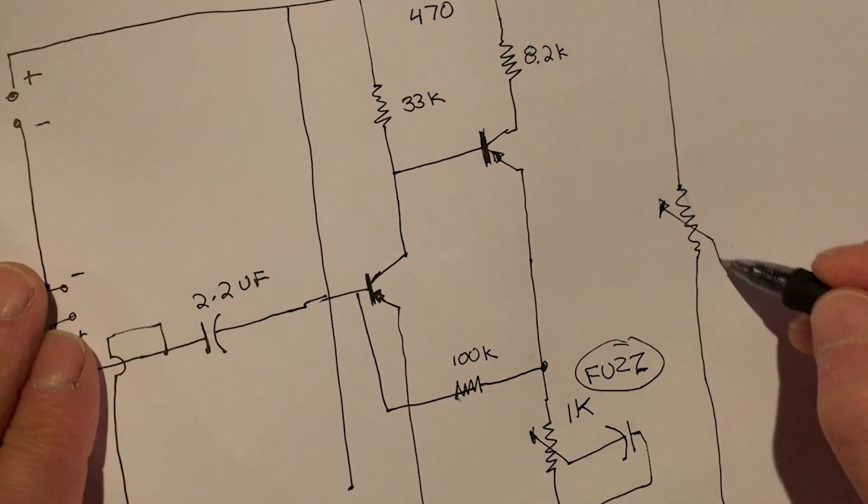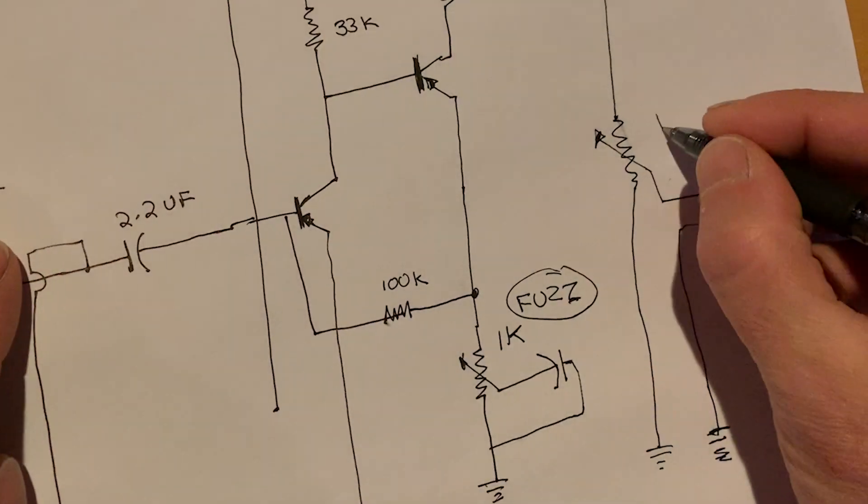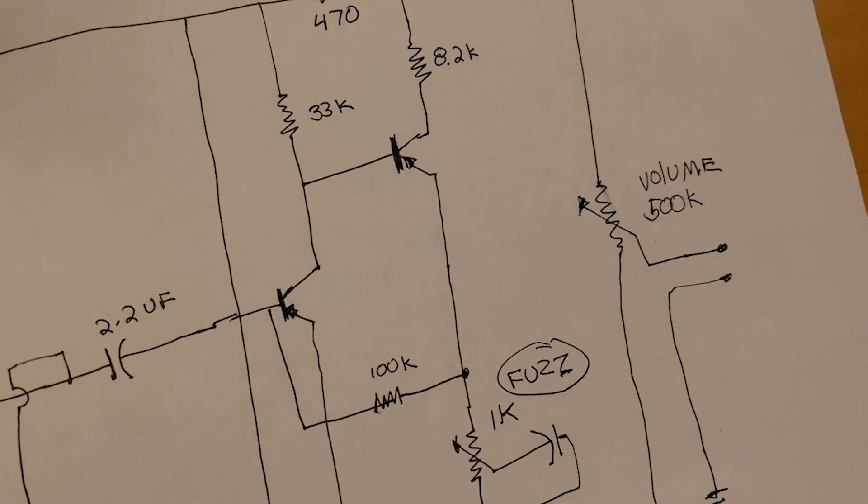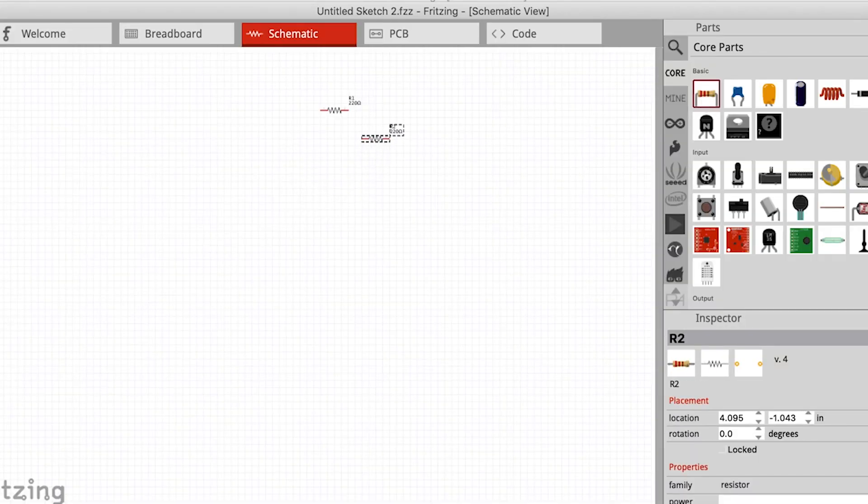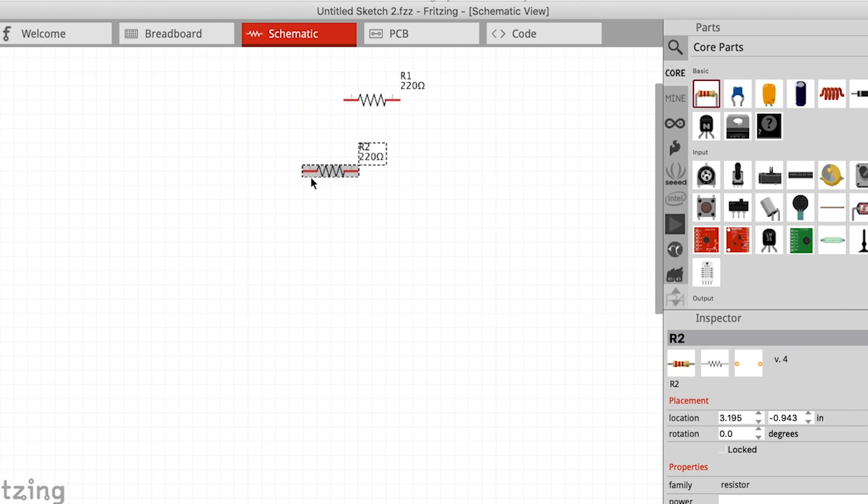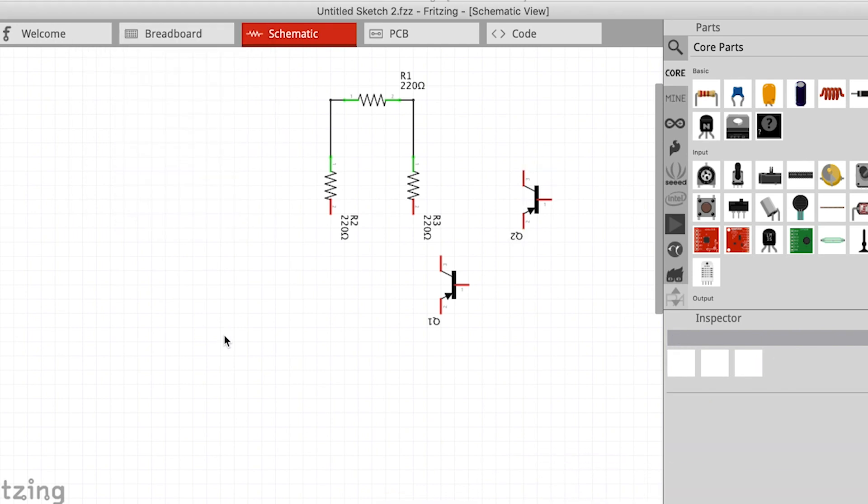So after I did this I moved it into a program called Fritzing and I'm just copying the schematic that I just drew out. This is pretty good because it has a couple different pages and you can use a breadboard system to lay it out and then test the circuit before you have to start soldering up the circuit board.